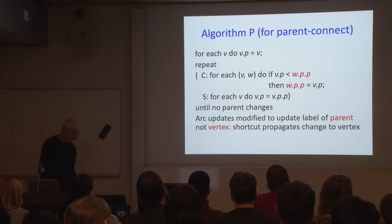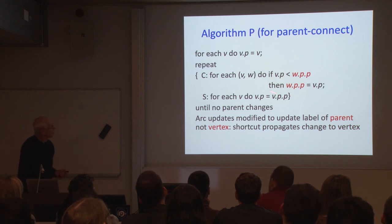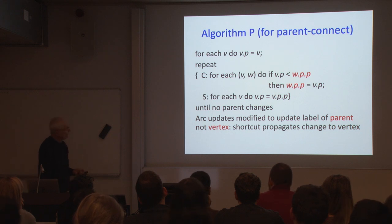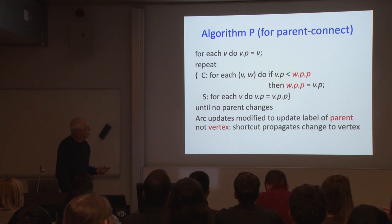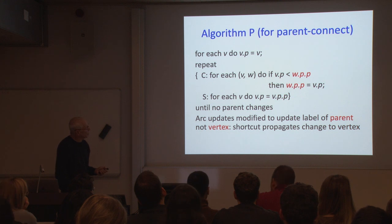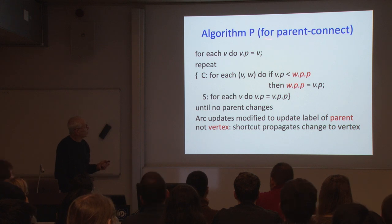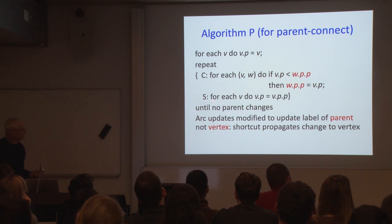Here is an algorithm — Algorithm P for parent connection — which might achieve a log n bound. The connection step alternates with the shortcutting step. In the connect step, for each arc V→W, if the label of V is less than the label of the label of W, we replace the label of W by the label of V. Then the shortcut step replaces each parent by its grandparent. We keep doing this until no parent changes. Very simple.